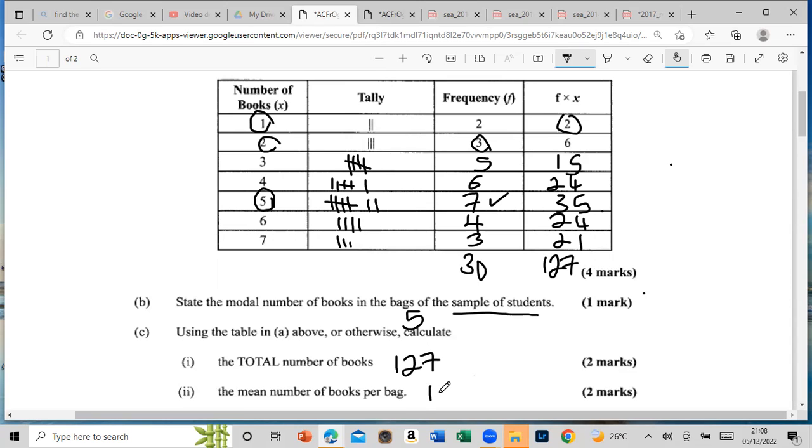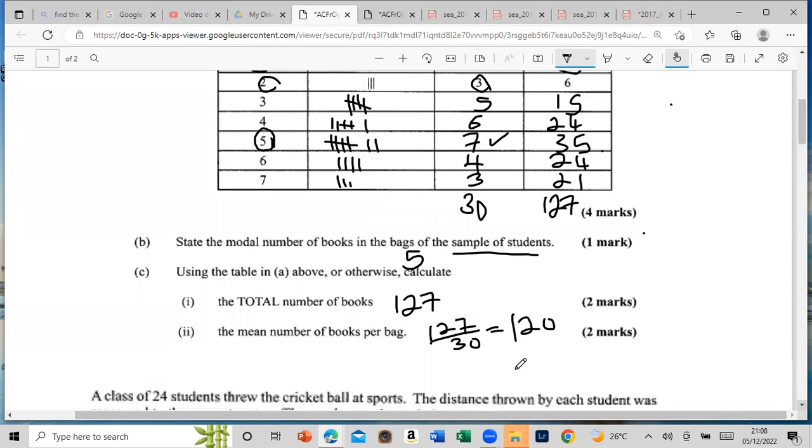And then they say calculate the mean. That would be 127 divided by 30. Four times thirty is 120, so it's actually four books. But I can't have four point something books, so I'm going to round it down to four books only.